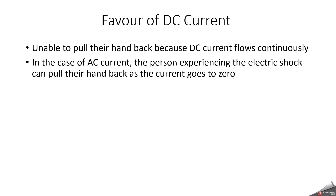First, let's discuss the case in favor of DC. When experiencing an electric shock with DC current, people are unable to pull their hand back because DC current flows continuously. This is the fact people use to say that DC current is more dangerous — the effect is similar to an electric doorbell supplied with DC current because it is a constant supply. In contrast, in the case of AC current, the person experiencing the shock can pull their hand back as the current goes to zero, because in a sinusoidal wave the current reaches zero at one point, allowing release.